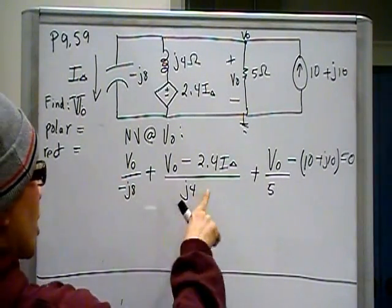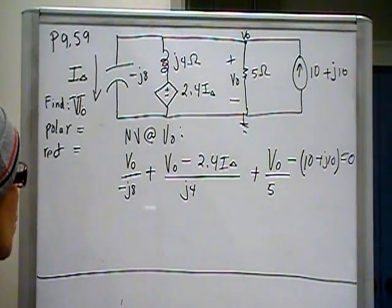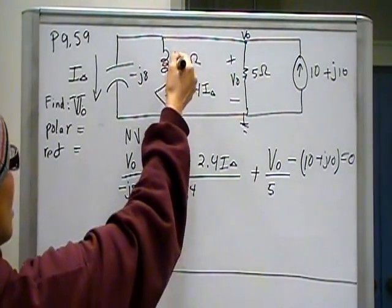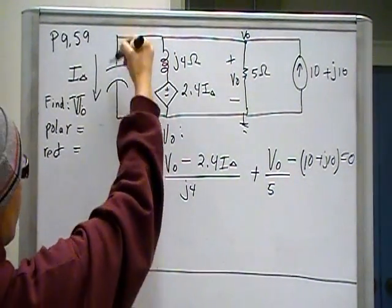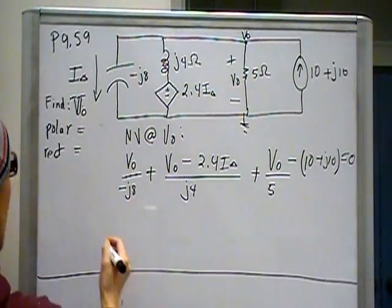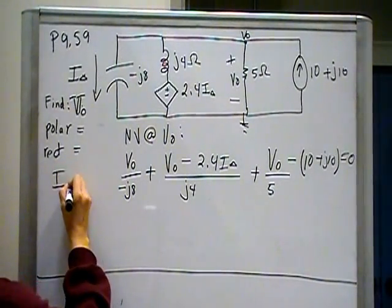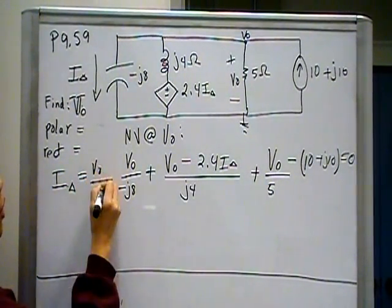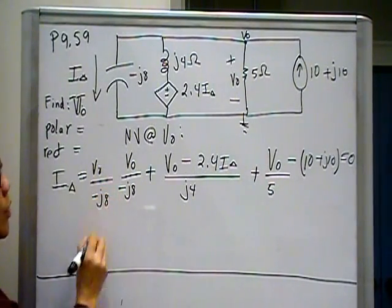Now, we have one equation and two unknowns. We need a second equation. And that second equation has come from the definition of I delta. I delta is this current through that capacitor. Therefore, I delta is equal to V out over minus J8.